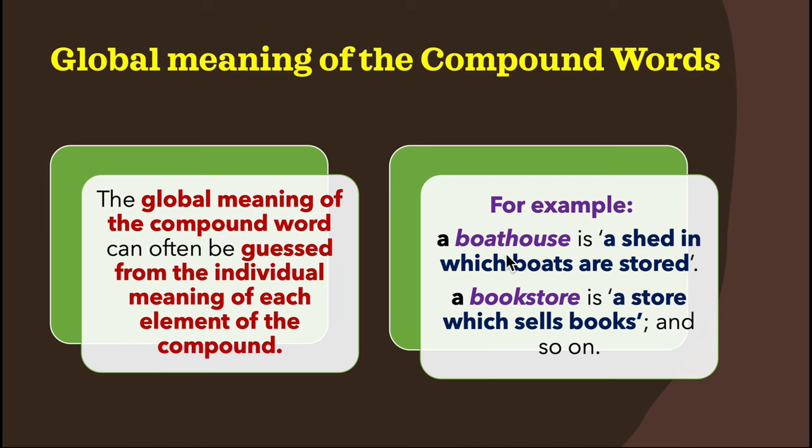Compound words usually have the primary stress on the first element — for example, aircraft, chewing gum. Following are a few possible combinations to make new words: noun + noun = noun (e.g., sunrise, dancing girl, handshake, air conditioning, cigar smoker).